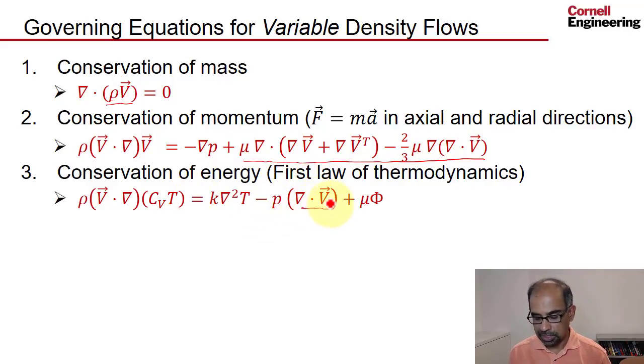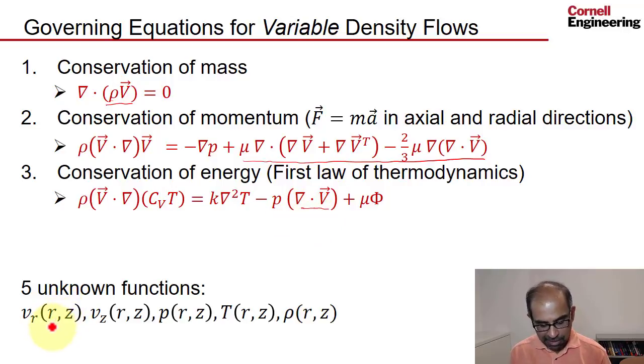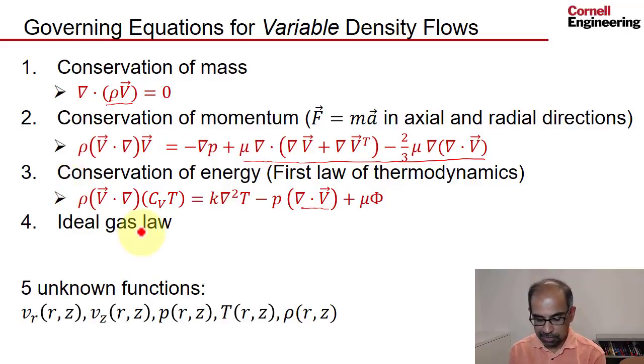And conservation of energy looks the same except that del dot v is now nonzero. So we have five unknown functions now because density now is also an unknown. But we have only four equations, which means we need to bring in one more equation.